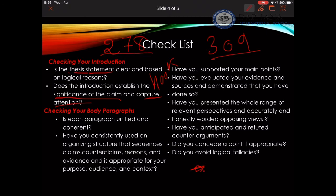When checking your body paragraphs, number one, pay attention to whether they are unified and coherent. Unity is addressed through having a link between each body paragraph and the thesis statement — how does that body paragraph substantiate evidence for your thesis? Coherence is addressed through transitions, which we've already mentioned. Next, show consistency in using an organized structure, and check the way you sequence your claims, counterclaims, reasons, and evidence.